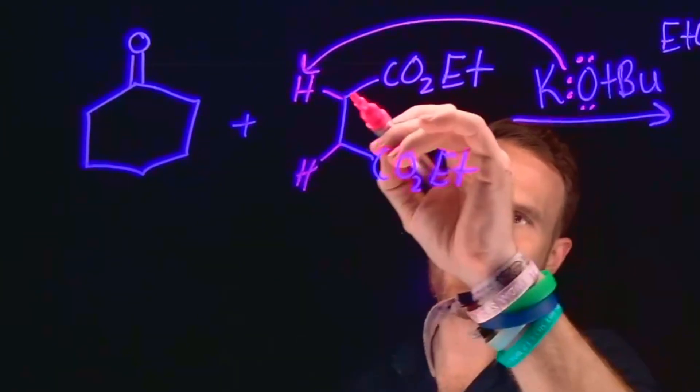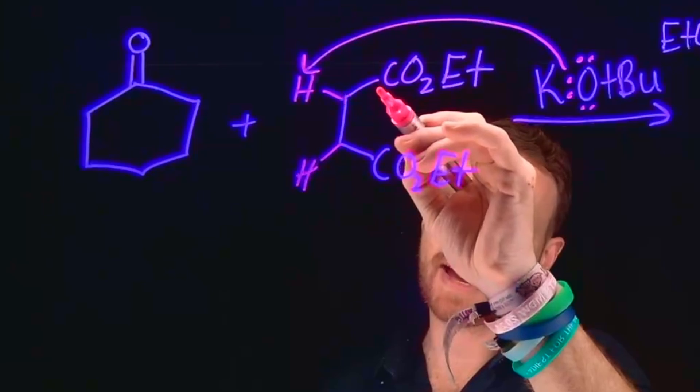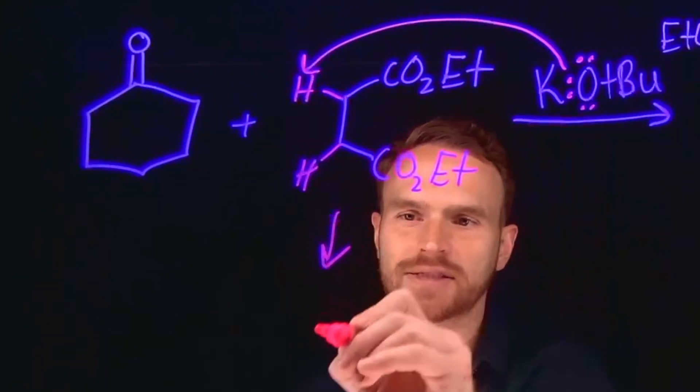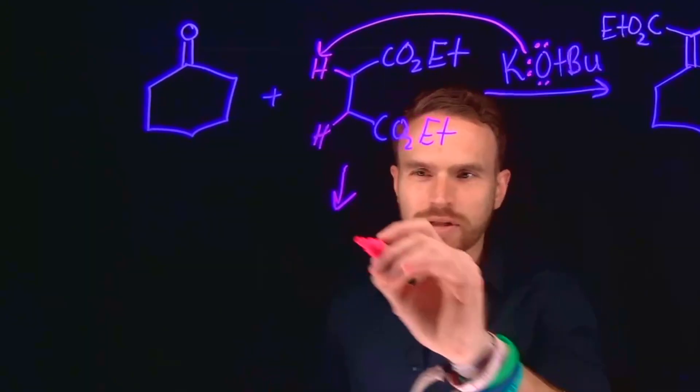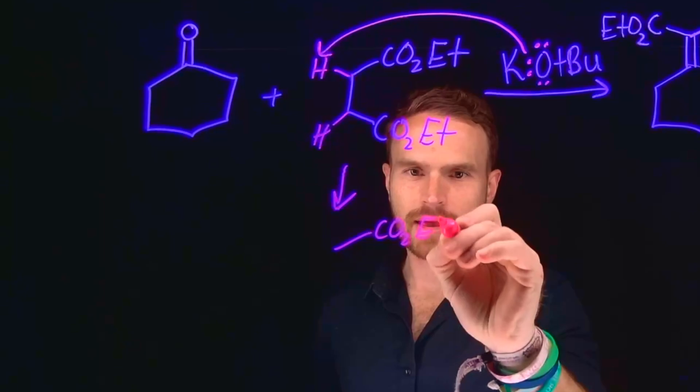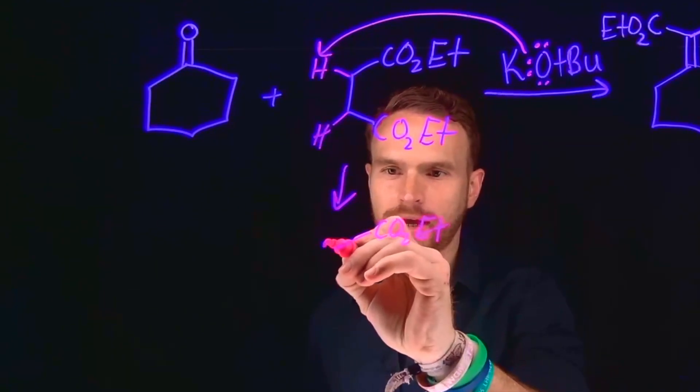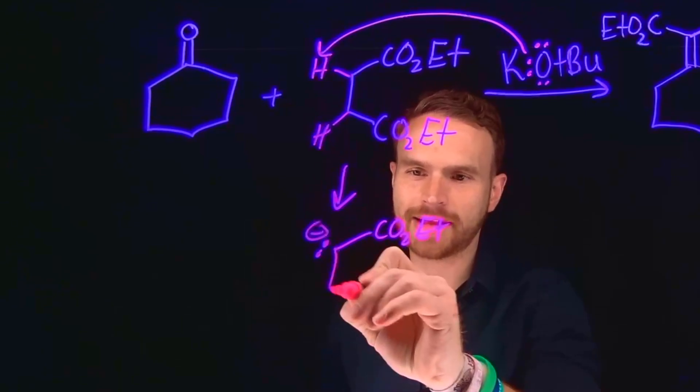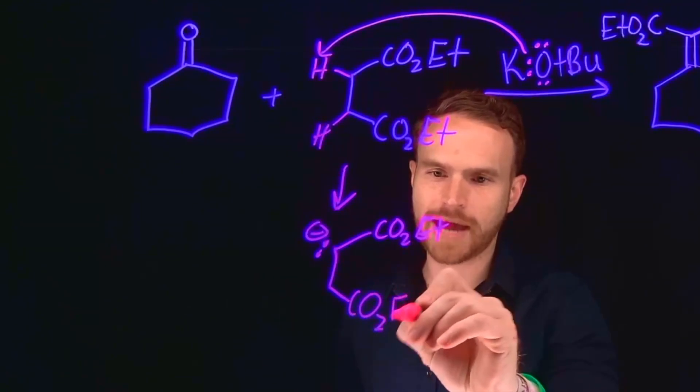An enolate forms via these electrons moving down to make a negatively charged oxygen and a carbon-carbon double bond or what you can think of as a nucleophilic carbon. That nucleophilic carbon is effectively like having a carbon nucleophile or a lone pair of electrons that's negatively charged or a carbanion at that position. That is basically the way that this reacts.